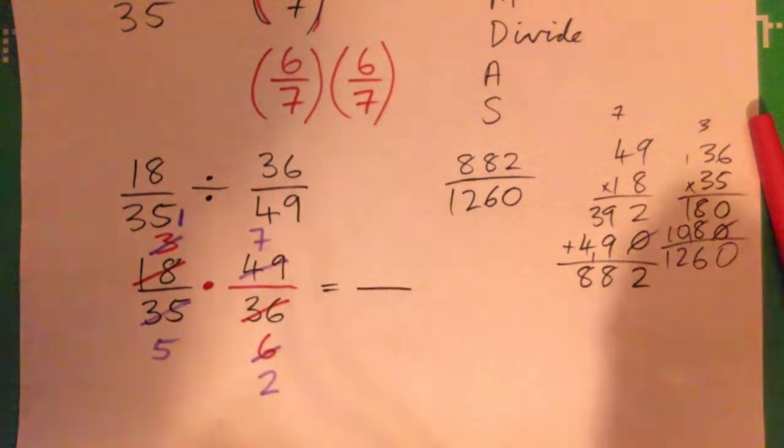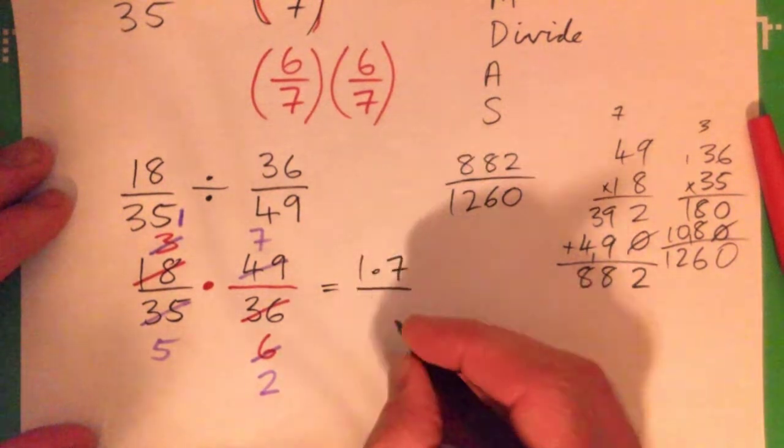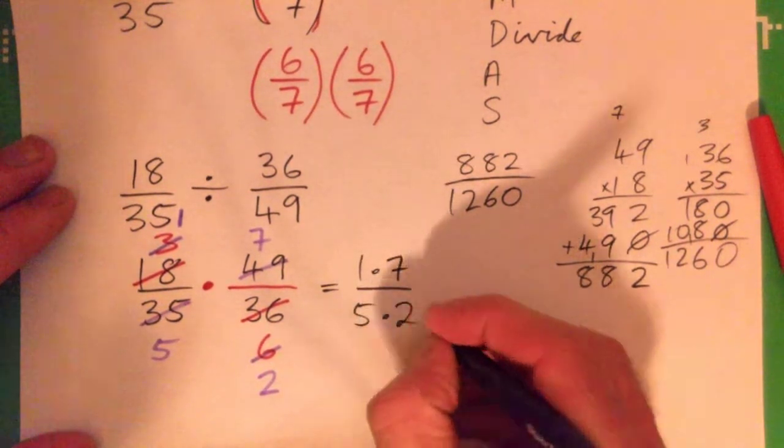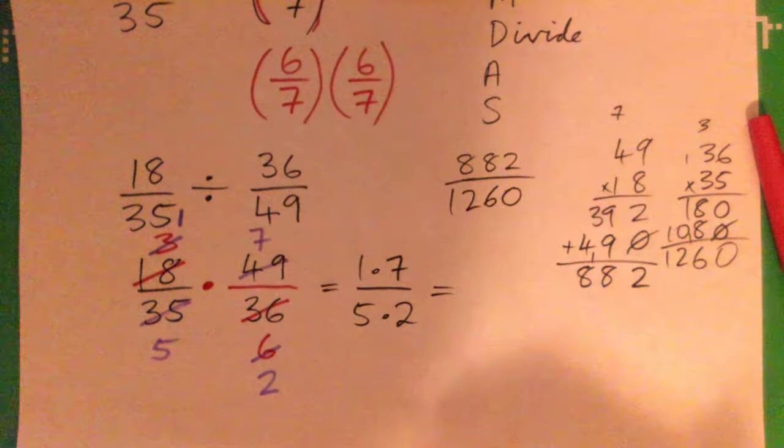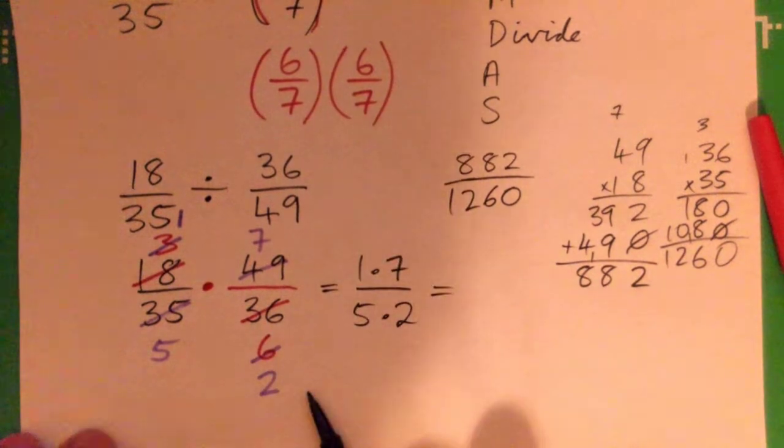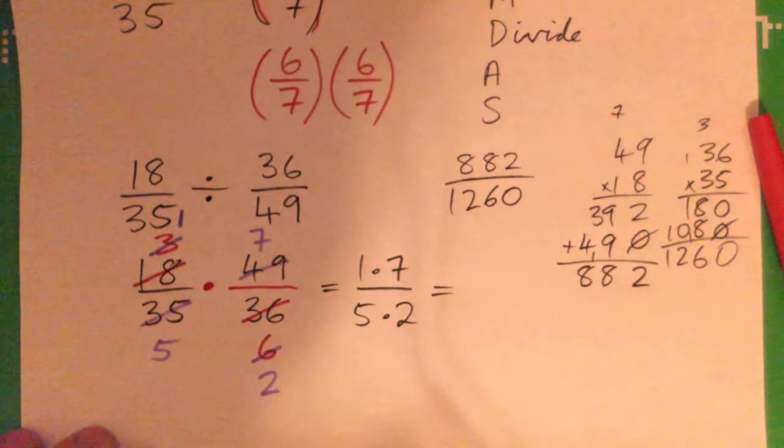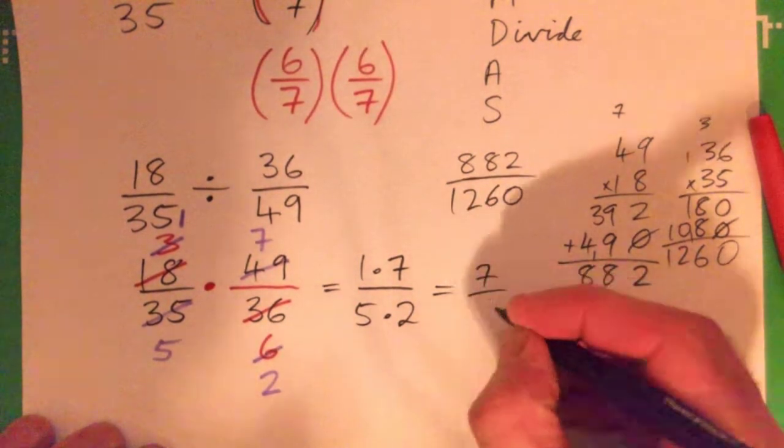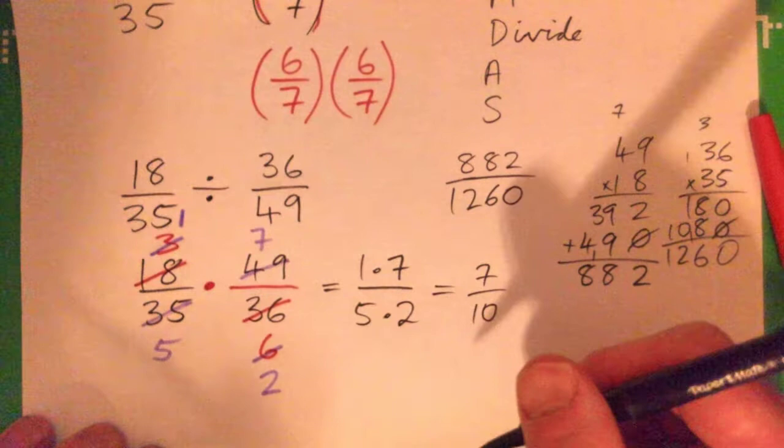All right, so I see one times seven on the top and a five times two on the bottom. You guys don't have to write this out like that, I'm just doing it for the purpose of clarity, but that's what we've got. Does anything else cross cancel? No, so that's seven tenths. That is correct.